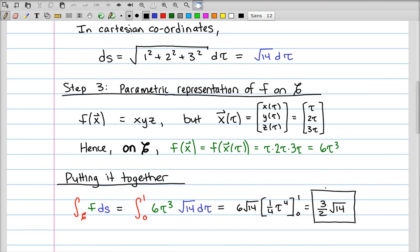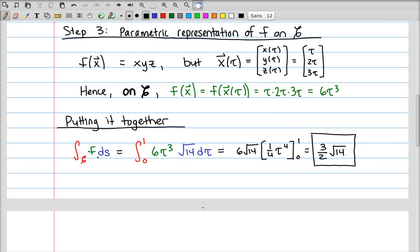Putting it all together, I have attempted to color code things here. We have the contour integral of the function f ds is the integral over tau from 0 to 1 of the function f of x of tau, 6 tau cubed, ds becomes root 14 d tau. So this is now just a Calculus 2 integral that you can do very simply, and we get an answer at the end, 3 halves root 14.